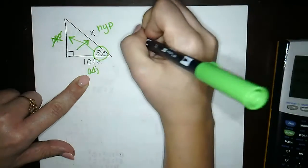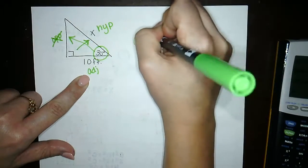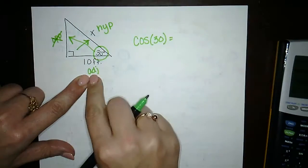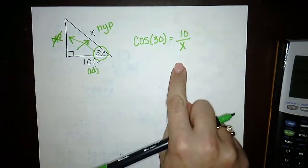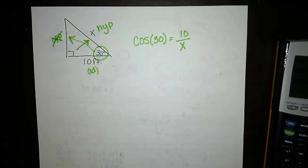So, what trig function are we using? Cosine. And it's adjacent over hypotenuse. You see how x is in the denominator? We're not going to multiply by 10. You can't do that. You have to get rid of your denominator first.